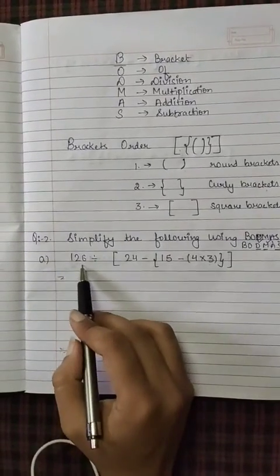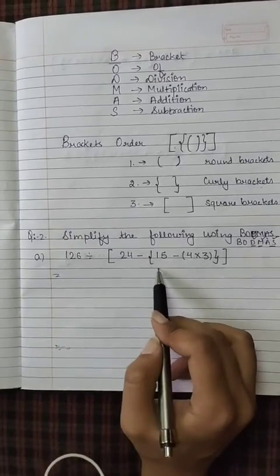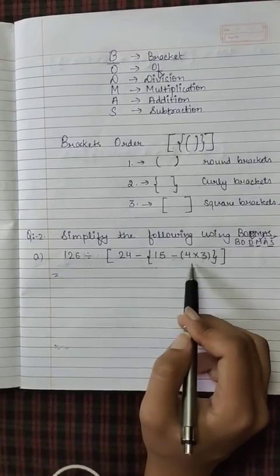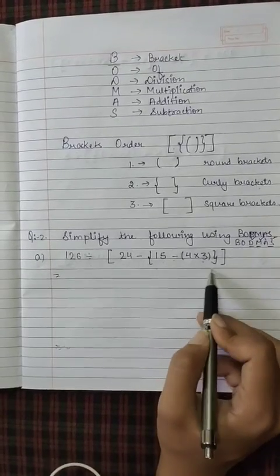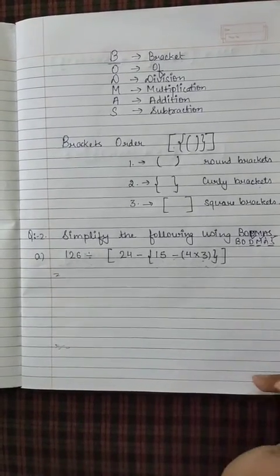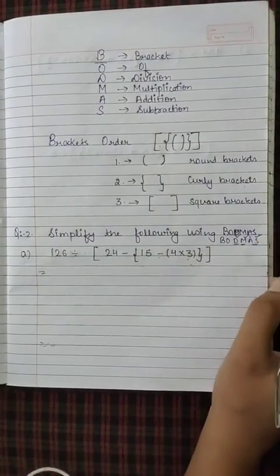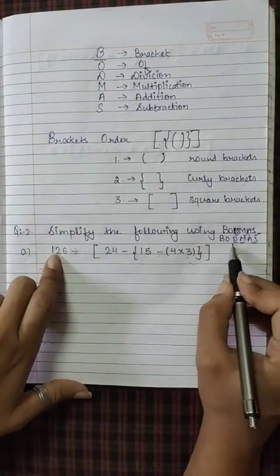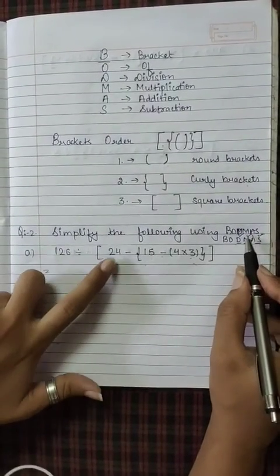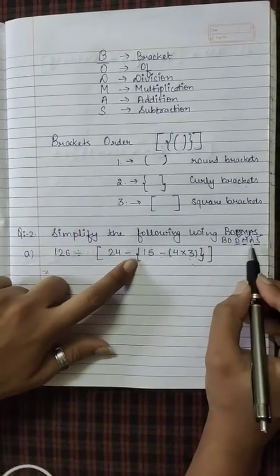This question here is 126 divided by 24 minus curly bracket starts 15 minus round bracket starts 4 and 2, 3, round bracket close, curly bracket close and square bracket close. So, as you did in grade 4, write BODMAS here. We have to do the operations and tick them. First of all we have division, then subtraction, then multiplication.